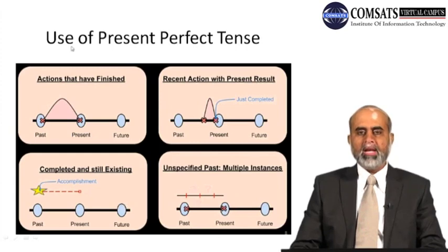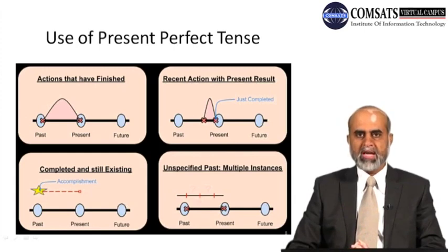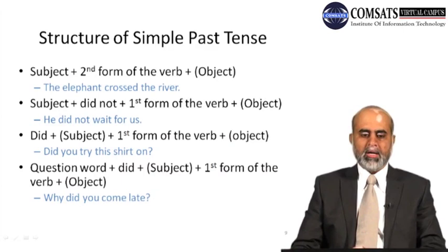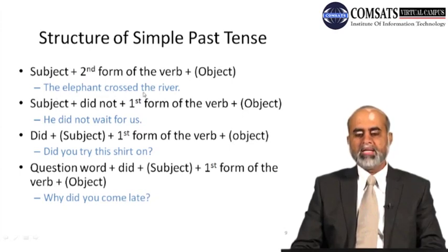Don't worry if these things are not yet clear, because we are going to look at past tense now, and afterwards we'll see the differences between present perfect and past simple. Let's look at the structure of simple past tense — something you probably already know. To form simple past tense, we start a positive sentence with a subject, then use the second form of the verb, and an optional object. For example: 'The elephant crossed the river' — 'the elephant' is the subject, 'crossed' is the second form of the verb, and 'the river' is the object.